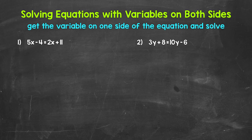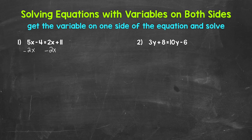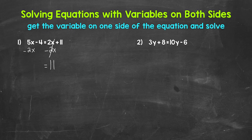So let's get the variable on the left side only. That means we need to undo or get rid of the 2x on the right side. That's a positive 2x, so the inverse operation would be to subtract 2x. Let's subtract 2x from the right side of the equation. Whatever we do to one side, we must do to the other, so subtract 2x from the left side as well. On the right side, positive 2x and minus 2x cancel each other out, leaving 11. On the left side, 5x minus 2x gives us 3x.